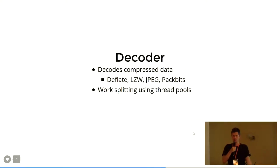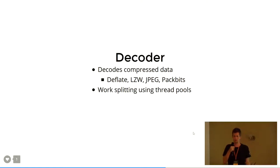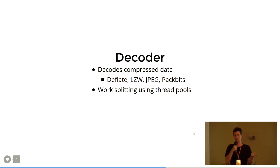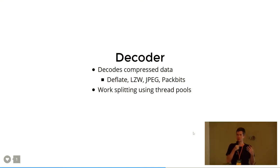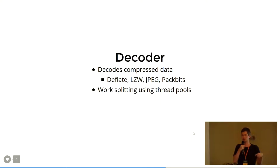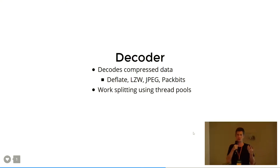The last part is the decoder. The decoder handles decompression of the image. Currently implemented formats include Deflate, LZW, JPEG, and PackBits. It's also possible to have the decoder in a decoder pool — a pool of web workers — so they share the decoder pool and you basically parallelize the decoding of the image, since this is the most CPU-intensive part of the work.